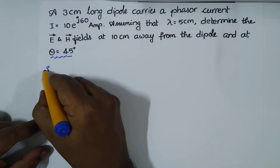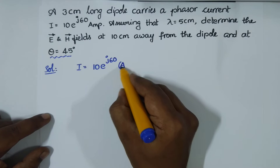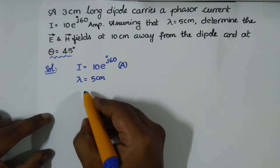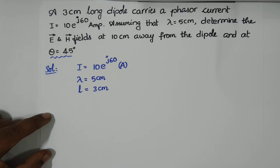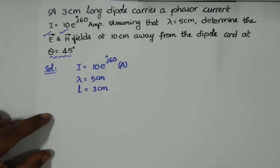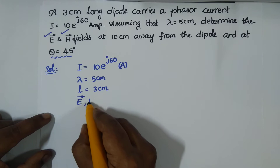So what is given to us: a phasor current, which is a complex quantity, 10e^(j60) amperes. The operating wavelength is lambda = 5 centimeters, and the length of the dipole is l = 3 centimeters. We must find the electric and magnetic fields.